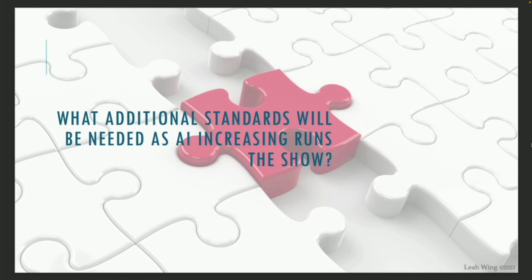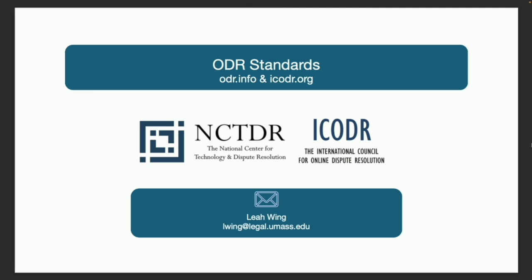I would like to ask us to think about what additional standards will be needed as AI increasingly runs the show, including the possibility that people will decide that either the standard needs to eliminate the fact that humans need to be in the loop, or to not follow these standards and instead decide that we don't need humans in the loop. We welcome at any time, because this is a living document, ideas about how the standards can be strengthened. Thank you.